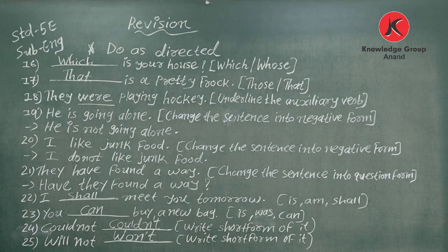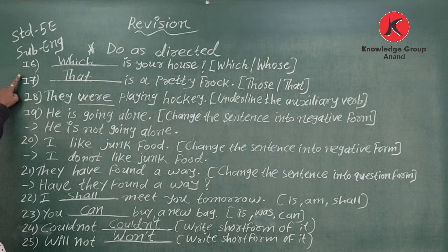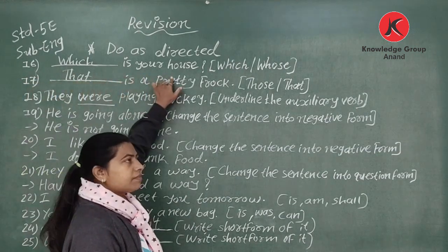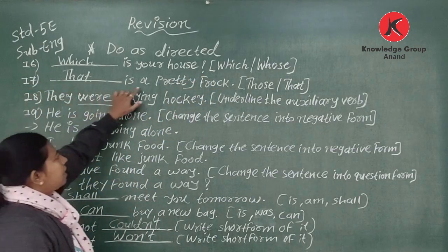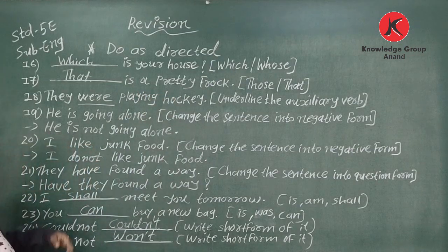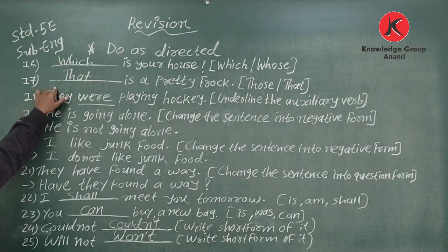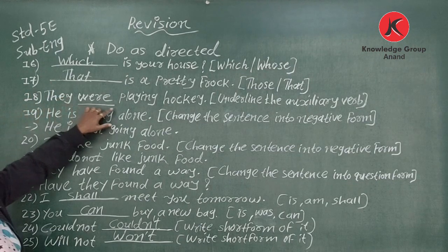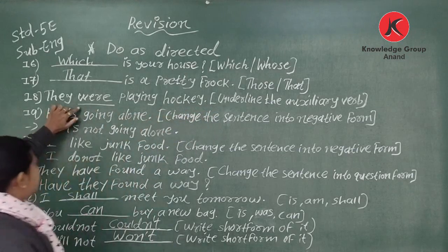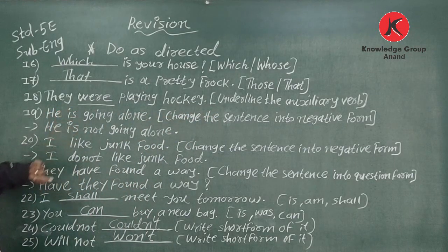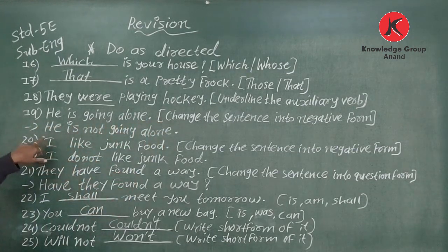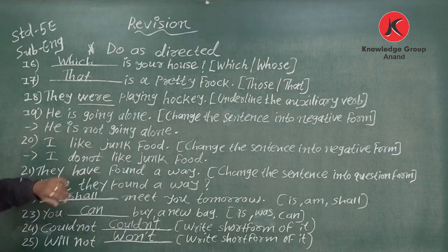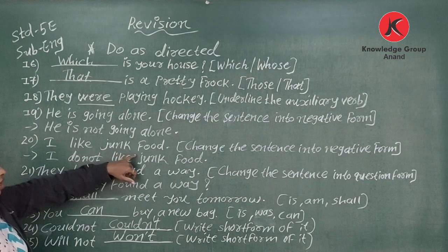I hope you have understood all the exercises. Let's read them once again. Number sixteen: 'Whose is your house.' Number seventeen: 'That is a pretty frog' — singular form so we use 'that.' Number eighteen: 'They were playing hockey' — auxiliary verb 'were' underlined. Number nineteen: 'He is not going alone' — negative form.